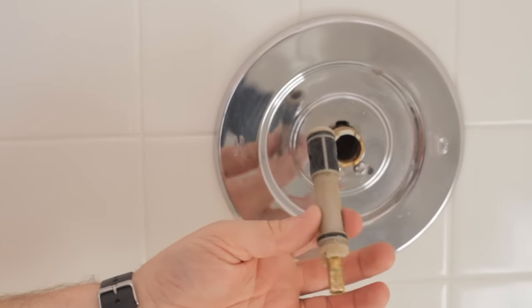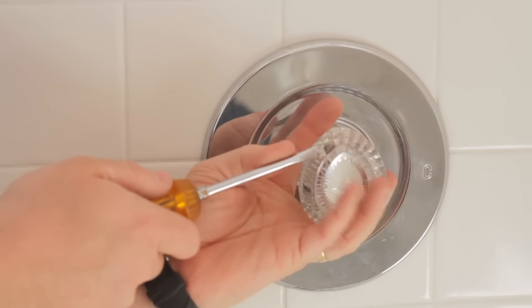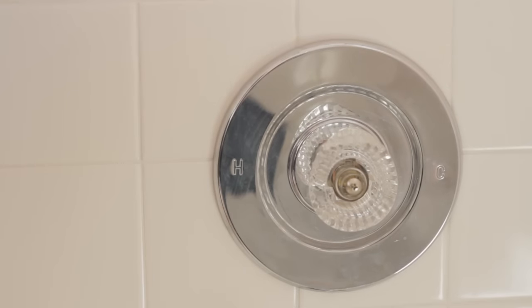Now when repairing a leaky shower faucet, first thing you want to do is remove the handle, remove the button, then remove the handle.